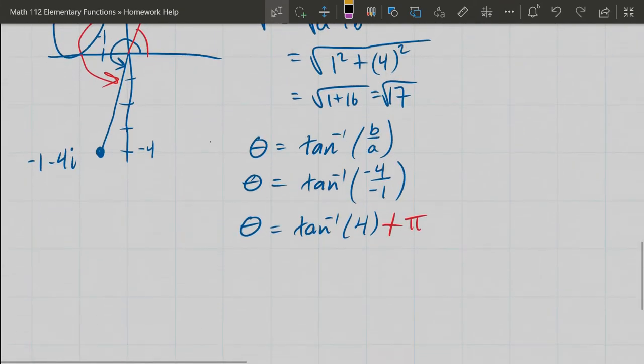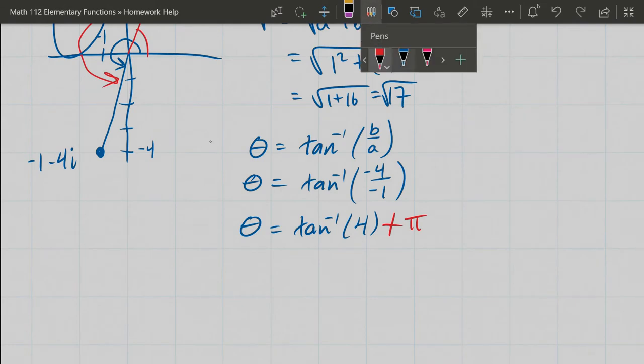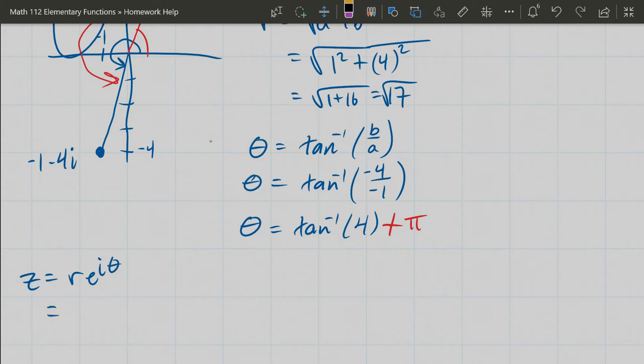So let's write the Euler form. Our radius was √17, e^(i(tan⁻¹(4) + π)).